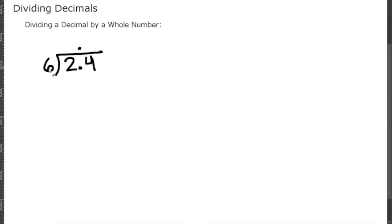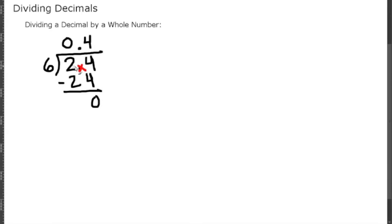How many times does 6 go into 2? Six cannot go into 2, so put a zero here. How many times does 6 go into 24? Six goes into 24 four times, so subtract 24. 24 minus 24 is zero, so 2 and 4 tenths divided by 6 gives us an answer of 0.4, or 4 tenths.